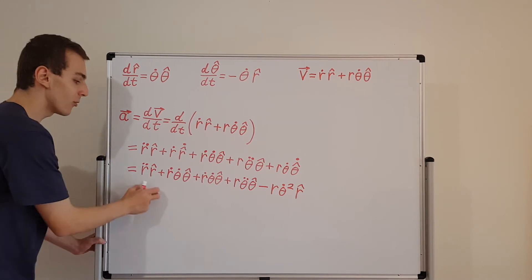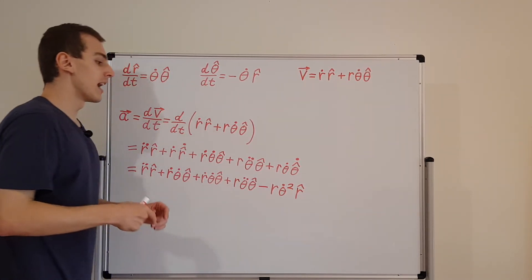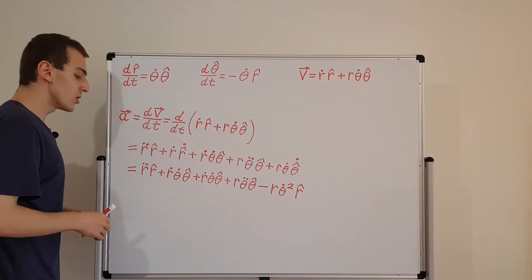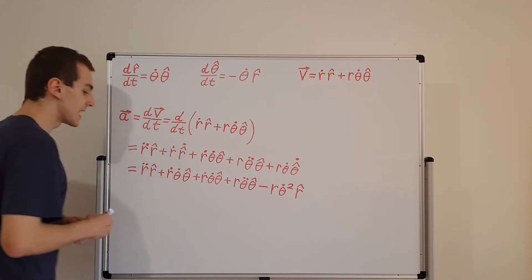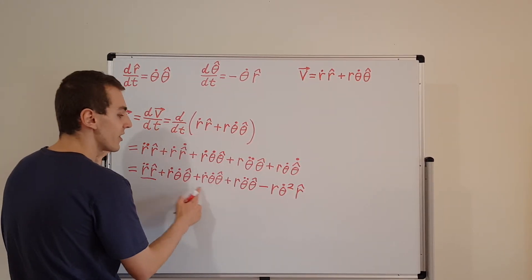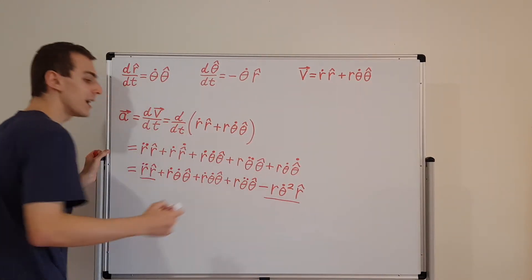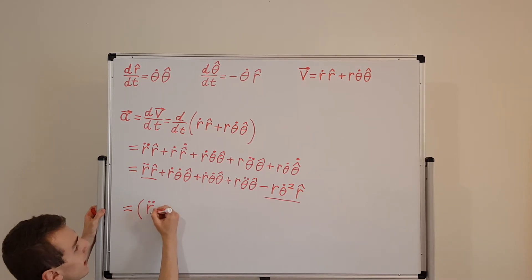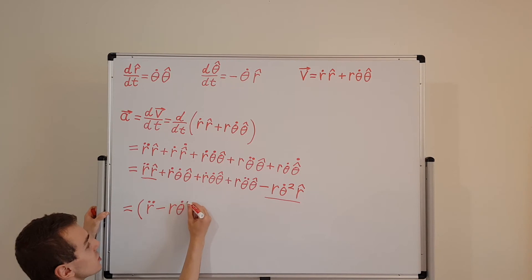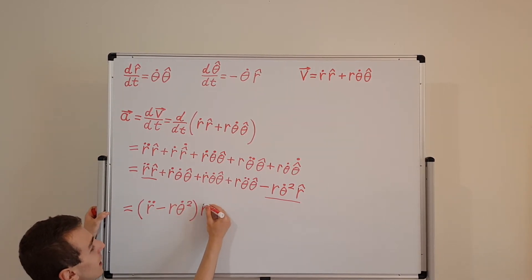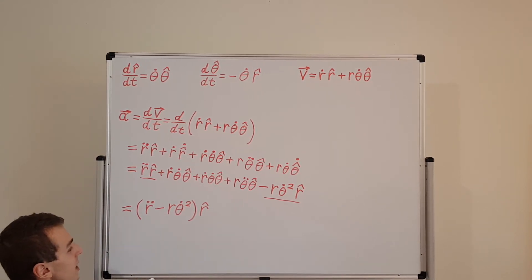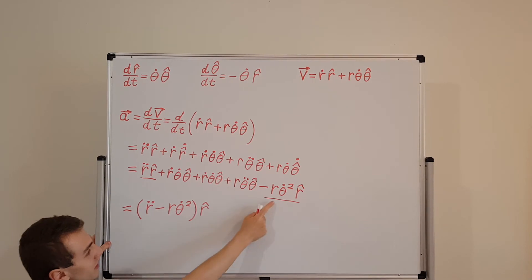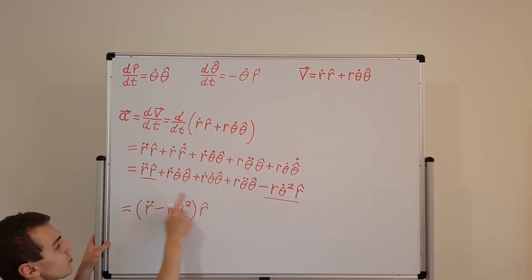Now we have all five terms. Let's group them by unit vector. The terms with r-hat are r-double-dot times r-hat and minus r theta-dot squared times r-hat. Grouping these together gives us (r-double-dot minus r theta-dot squared) times r-hat. This is the acceleration in the radial direction. The minus sign comes from the derivative of theta-hat.